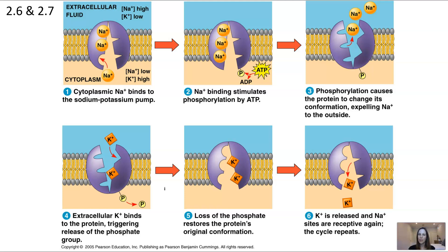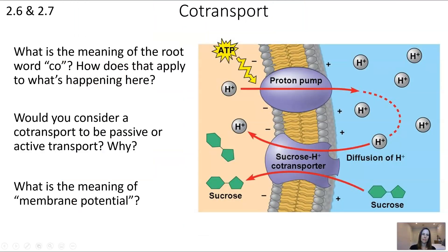Each step is shown with captions in the slides. Now we have an even more complicated system with two different types of proteins: a proton pump and a sucrose-proton co-transporter. The prefix 'co' means together, so a co-transporter moves two molecules across the membrane together. Would you consider a co-transporter to be passive or active, and what is the meaning of membrane potential?